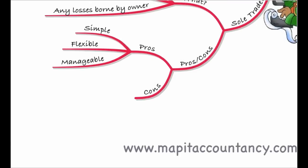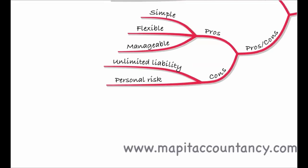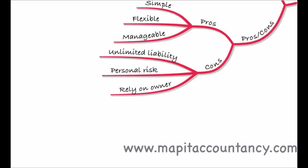On the downside, the key issue is unlimited liability. If you make losses as a sole trader, you personally are responsible for them and will have to make good those losses, even if it means selling your own assets. You're going to have to take that personal risk. You also have to rely on yourself; you make all the decisions, you are the owner, you are taking all the risk. So that's the first option: set the business up as a sole trader, taking full responsibility knowing the risk is all yours.